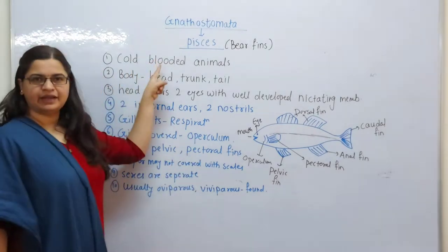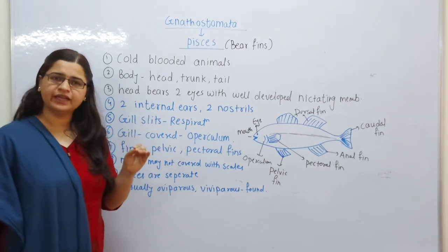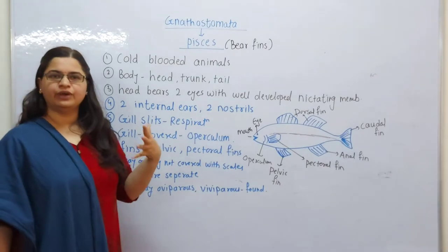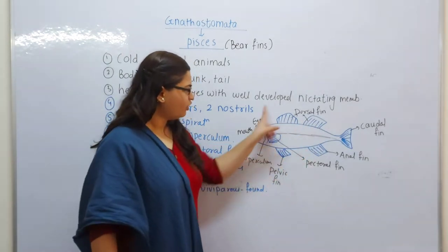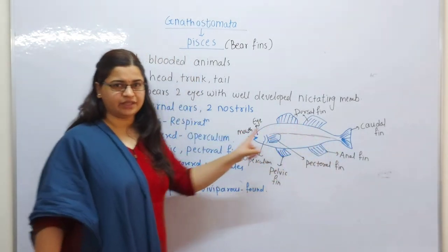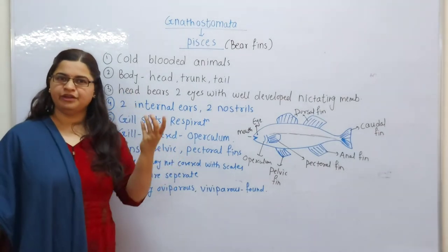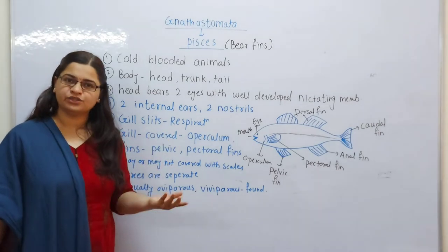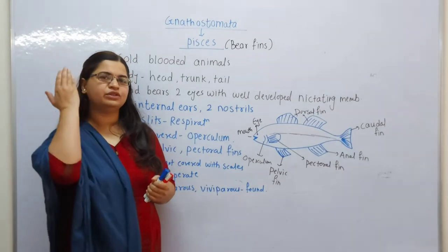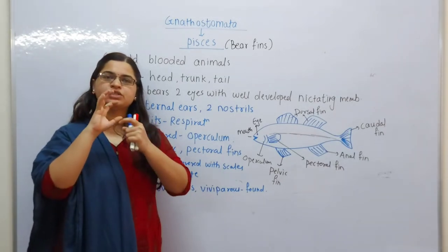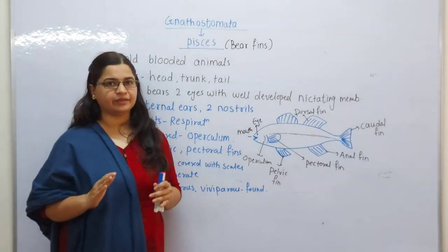They are cold-blooded animals — this is the very first point you all have to remember. Fish have two eyes, and there is also a nictitating membrane. When the eyes open, a covering slides along with them. This membrane helps with opening and closing the eyes in water.